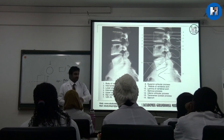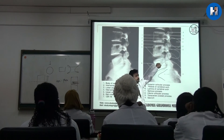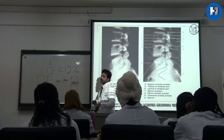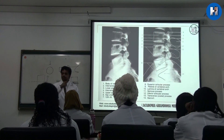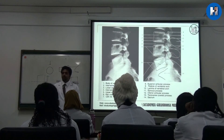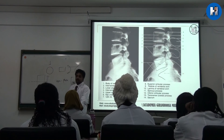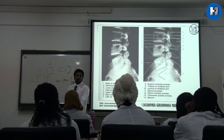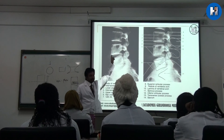If one vertebra has moved on another, we call it spondylolisthesis. Spondylolysis shows what we call the Scotty dog appearance in oblique view. But for disc prolapse, X-ray cannot show it — we go for MRI. MRI is best for showing soft tissue, cutting in slices to show where the prolapse is.